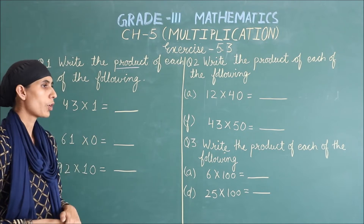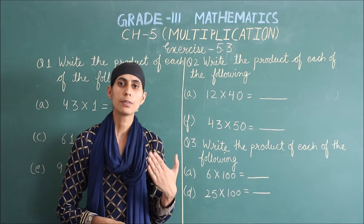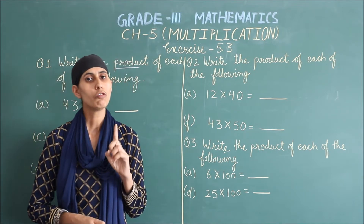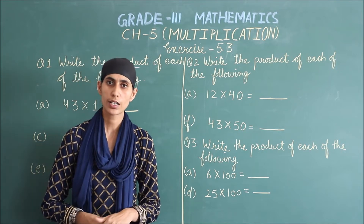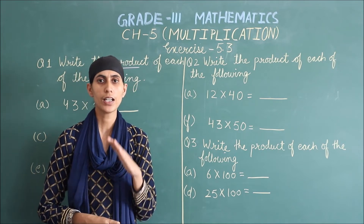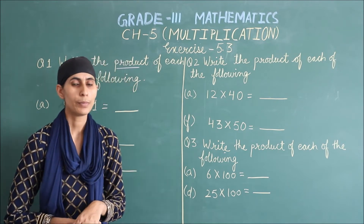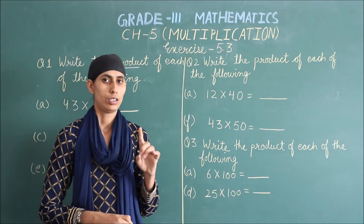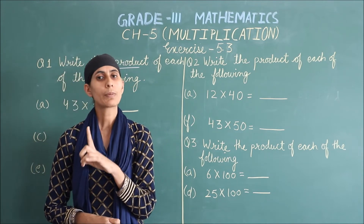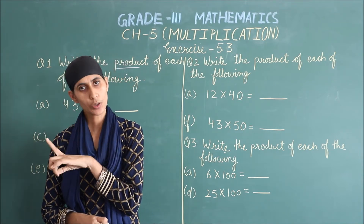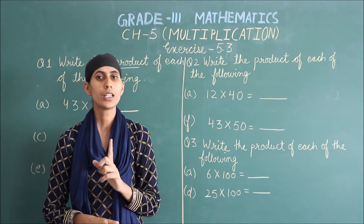سب سے پہلے کونسی property ہوتی ہے؟ اگر ہم کسی بھی نمبر کو 1 سے multiply کرتے ہیں، تو ہمارے پاس answer ہمیشہ number itself آتا ہے۔ Means, 2 multiply by 1 — تو آپ کا answer کیا ہوگا؟ 2 — number itself آگیا۔